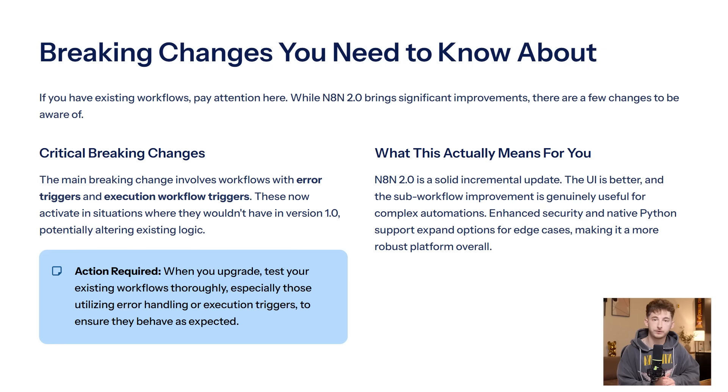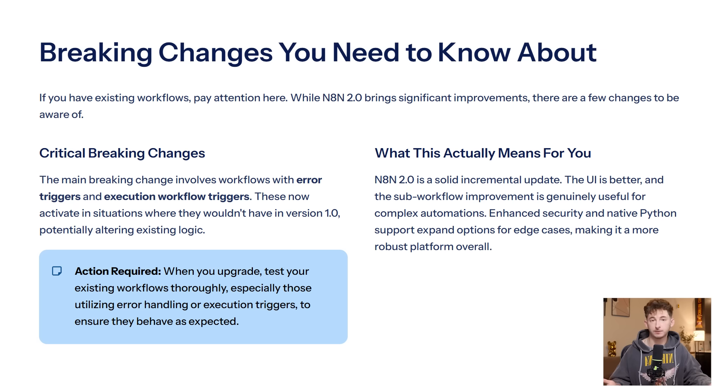Here's the bottom line: 2.0 is a solid incremental update. The UI is better. The sub-workflow improvement is legitimately useful for complex automations. The security enhancements are good to have, and native Python expands your options for edge cases. But your fundamental approach to building AI automations or automations in general doesn't change. The problems you're solving don't change, and the value you're delivering doesn't change.